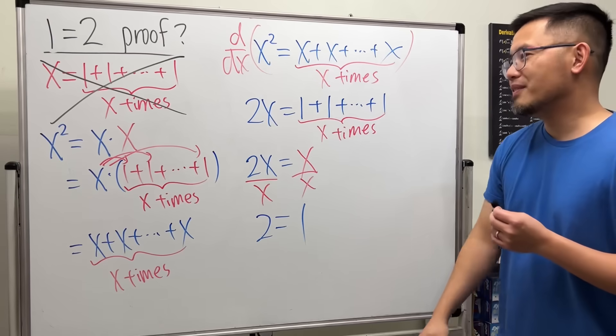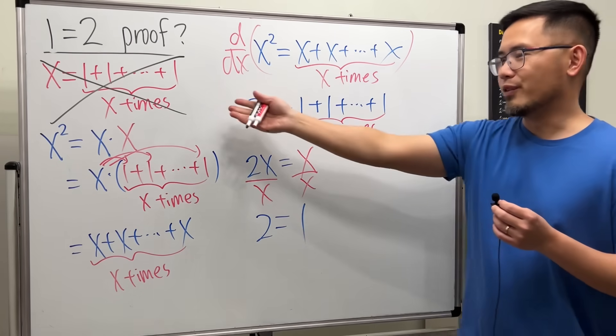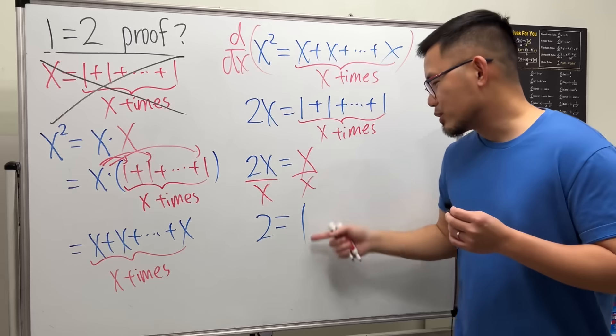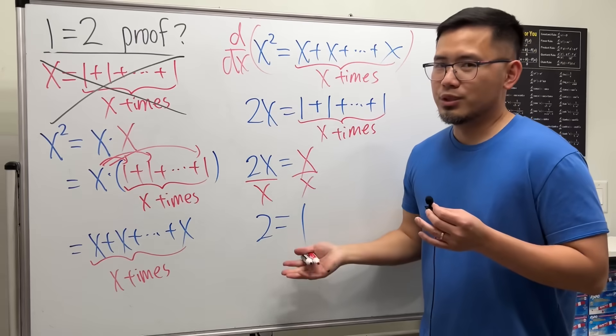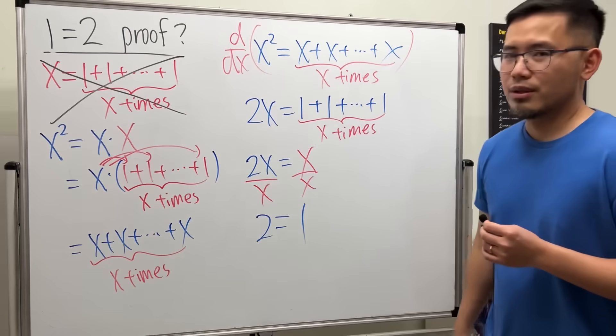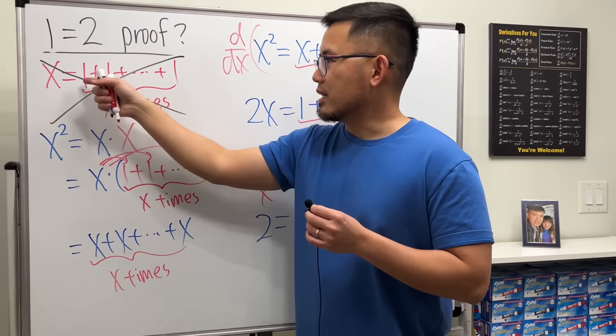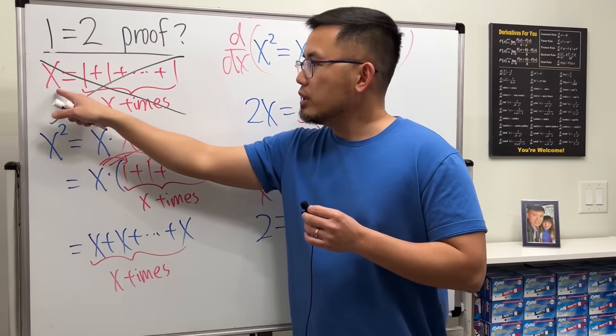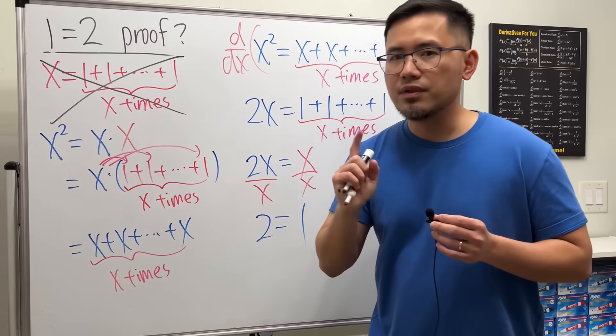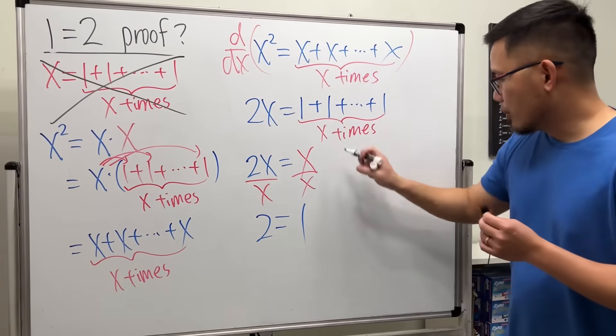But if you want to do this like legitimately, of course this is not legitimate. That's why you end up with a ridiculous result. So how come this is incorrect though? This right here, if you want to break it down as like a lot of ones adding, it only works if X is a positive whole number.